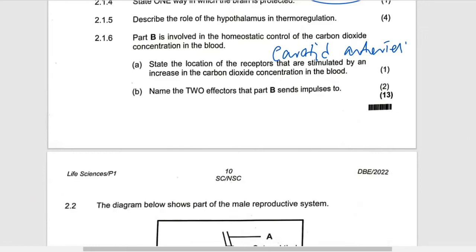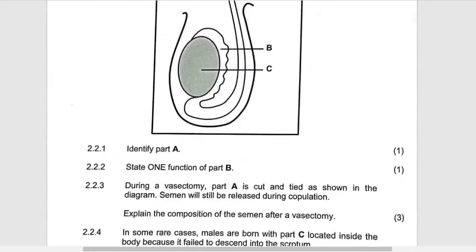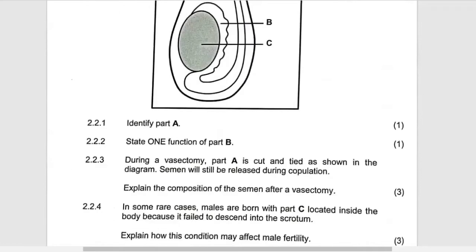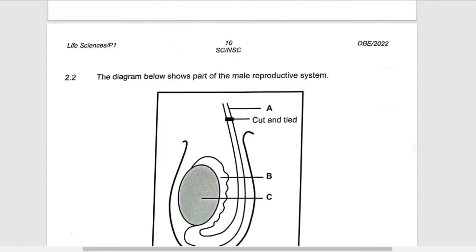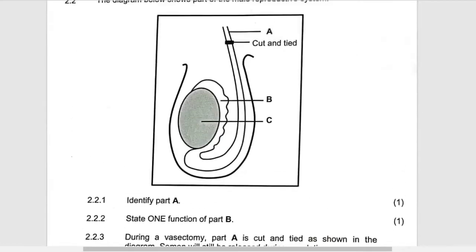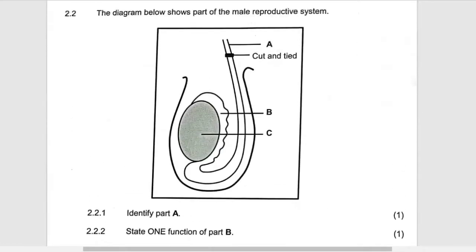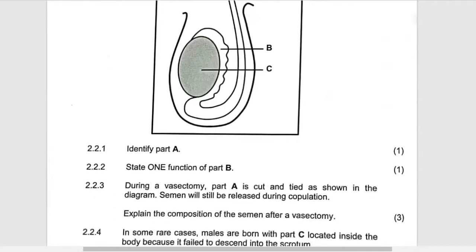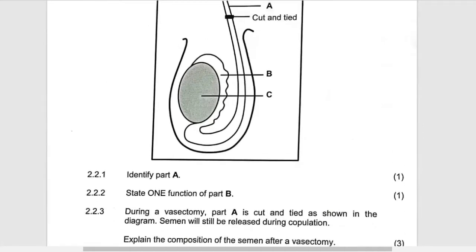Another question is about reproduction, and that is the male. You have A which is vas deferens, B which is epididymis, and C which is testis. Identify A — we have seen it — which is vas deferens.